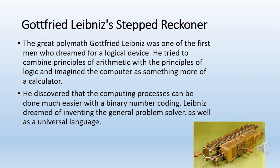Leibniz hired a skillful mechanician, the local clock maker, to help him make the first metal prototype. It is unknown how many machines were actually manufactured by Leibniz. One machine was stored in the attic of a building at the University of Göttingen, where it remained until 1879 when it was discovered by a work crew fixing a leak in the roof. At present time, there exist two old machines and several replicas.